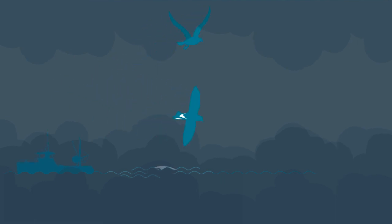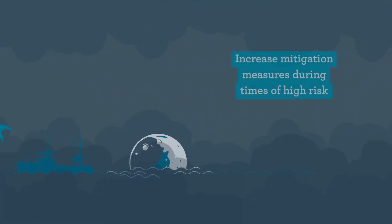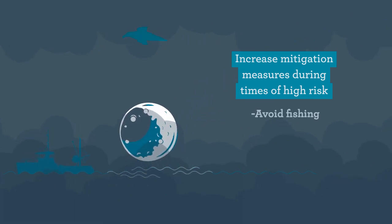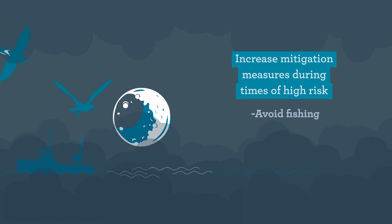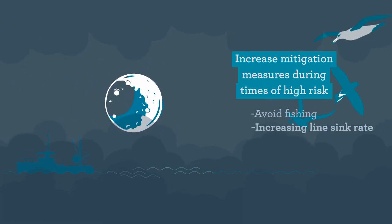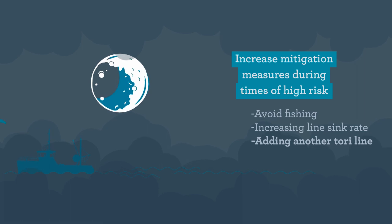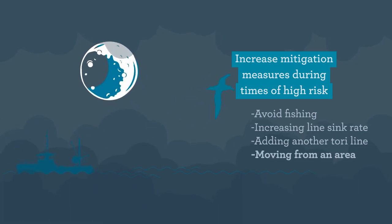Bright nights during full moon periods are a time of higher risk for seabirds and increased mitigation should be employed. Avoid fishing during bright nights, increase line sink rate, add another tory line, or move from an area of high seabird activity.